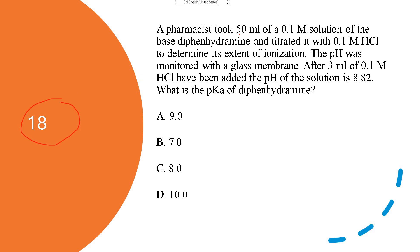Next, a pharmacist took 50 ml of 0.1 molar solution of diphenhydramine and titrated it with 0.1 molar HCl to determine the extent of ionization. The pH was monitored with a glass membrane electrode, and after 3 ml of 0.1 molar HCl had been added, the pH of the solution was 8.82.